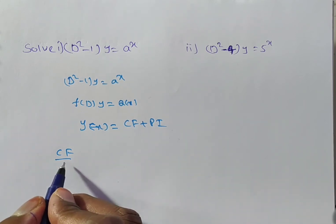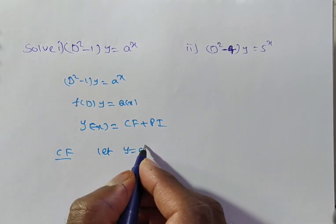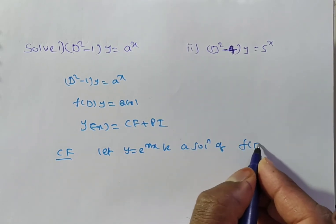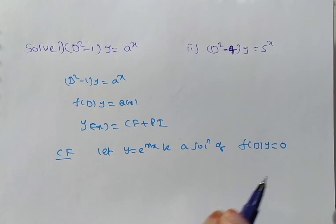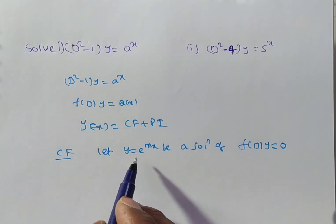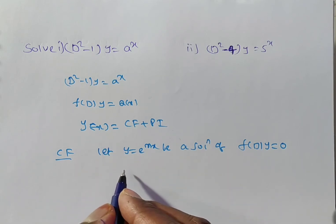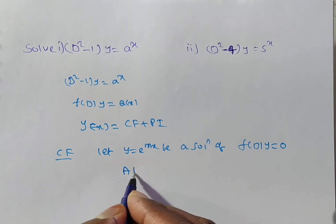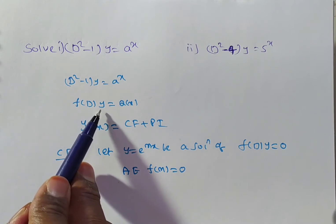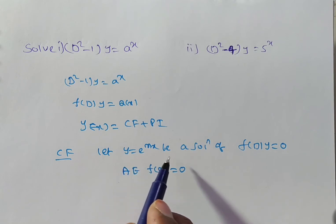Now we are finding the complementary function. To find it, let y = e^(mx) be a solution of f(D)y = 0. Here we consider Q(x) as zero and substitute y = e^(mx) as the solution. Then we get the auxiliary equation f(m) = 0. That is, f(D)y = 0 becomes f(m) = 0 when y = e^(mx) is substituted.